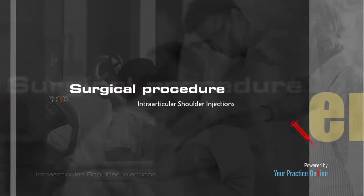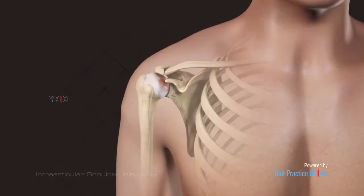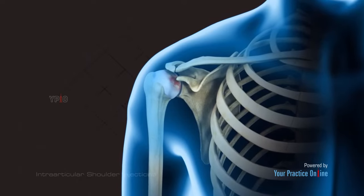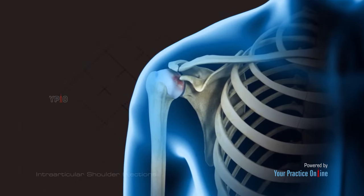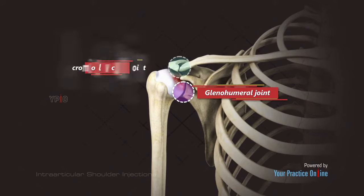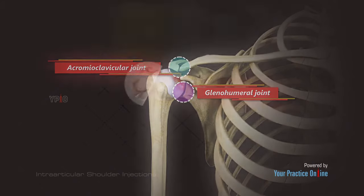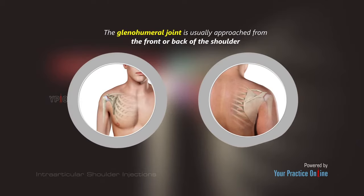The administration of the injection depends upon the condition to be treated. Your doctor may inject the glenohumeral joint or the acromioclavicular joint. The glenohumeral joint is usually approached from the front or back of the shoulder.